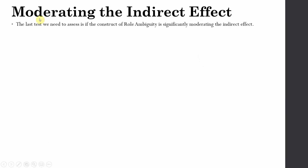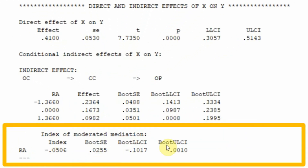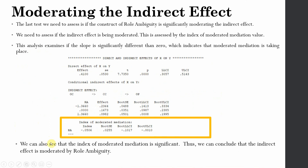The last test is whether role ambiguity significantly moderates the indirect effect. Yes, it does — the index of moderated mediation confirms that role ambiguity moderates the indirect effect of OC on OP through CC. The strength of the indirect effect changes with the change in role ambiguity. This is significant because there is no zero in the confidence interval. We can conclude that the indirect effect is moderated by role ambiguity.